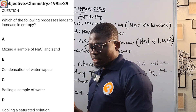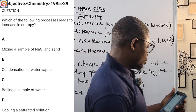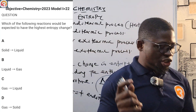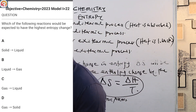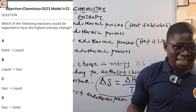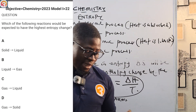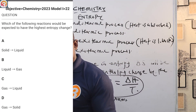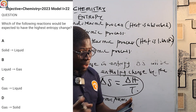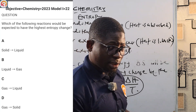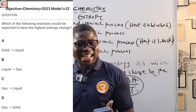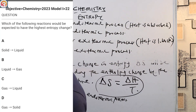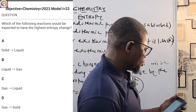The 2023 question 22: which of the following reactions would be expected to have the highest entropy change? Option A — solid to liquid: cannot give the highest entropy change. Option B — liquid to gas: just like boiling water, changing from liquid to gaseous state. Option C — gas to liquid. Option D — gas to solid. The correct answer is B, liquid to gas.